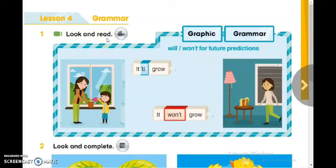Please open your pupils book page 101. Look and read. Look at these pictures in the similar books. What can you see in the first picture? Yes, excellent, we can see this mother with her daughter. What are they doing? Yes, they are watering the plant and she said about this plant it will grow, it will grow.